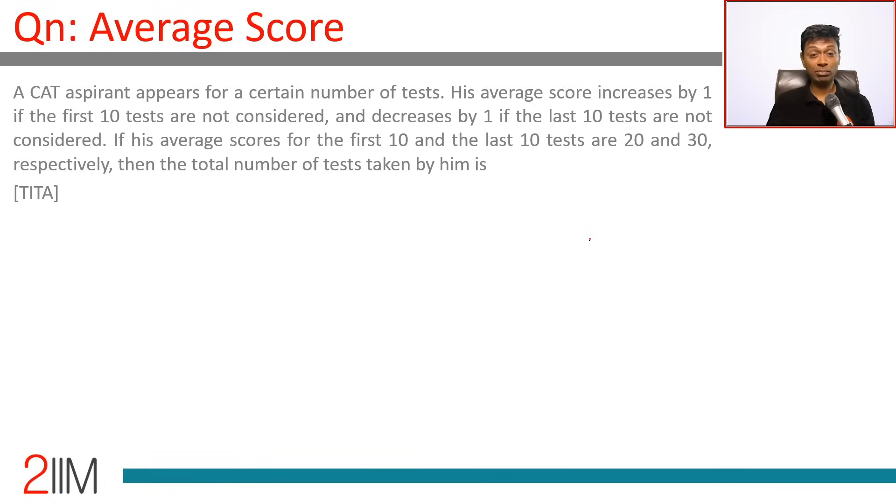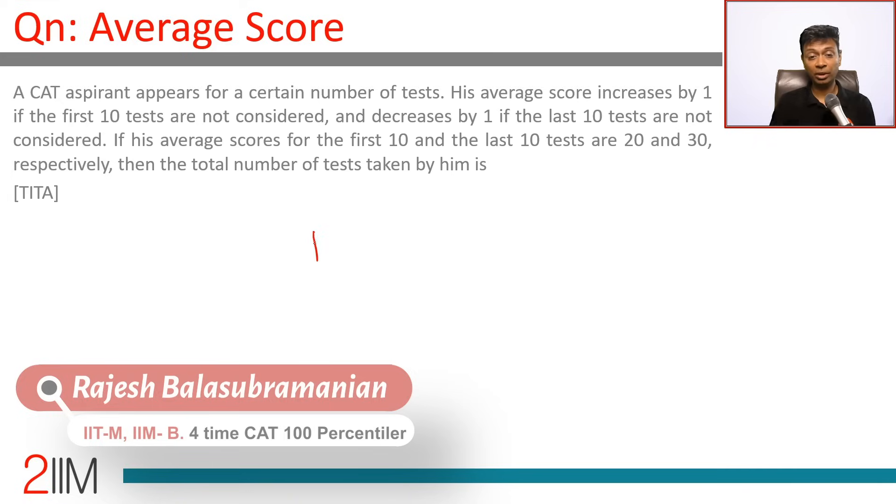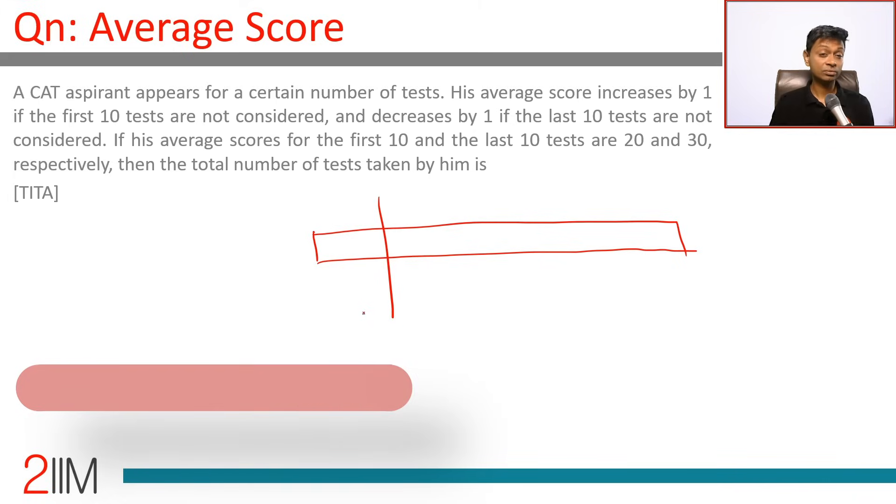A CAT aspirant appears for a certain number of tests. His average score increases by 1 if the first 10 tests are not considered. So he is appearing for a certain number of tests, the first 10 are not considered, and let us say the final number is n tests, so n minus 10 are considered, first 10 are not considered.